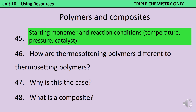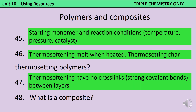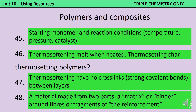The properties of polymers can be influenced by the starting monomer and the reaction conditions, such as temperature, pressure, and whether a catalyst is used. Thermosoftening polymers will soften when heated, whereas thermosetting polymers won't — they'll eventually char and burn. This is because thermosoftening polymers consist of individual polymer chains that aren't bonded together, whereas thermosetting polymers have strong covalent cross-links between the chains. A composite material is made from two parts: a matrix or binder surrounding fibres or fragments of reinforcement. An example is steel-reinforced concrete — the concrete resists compression while the steel resists stretching.